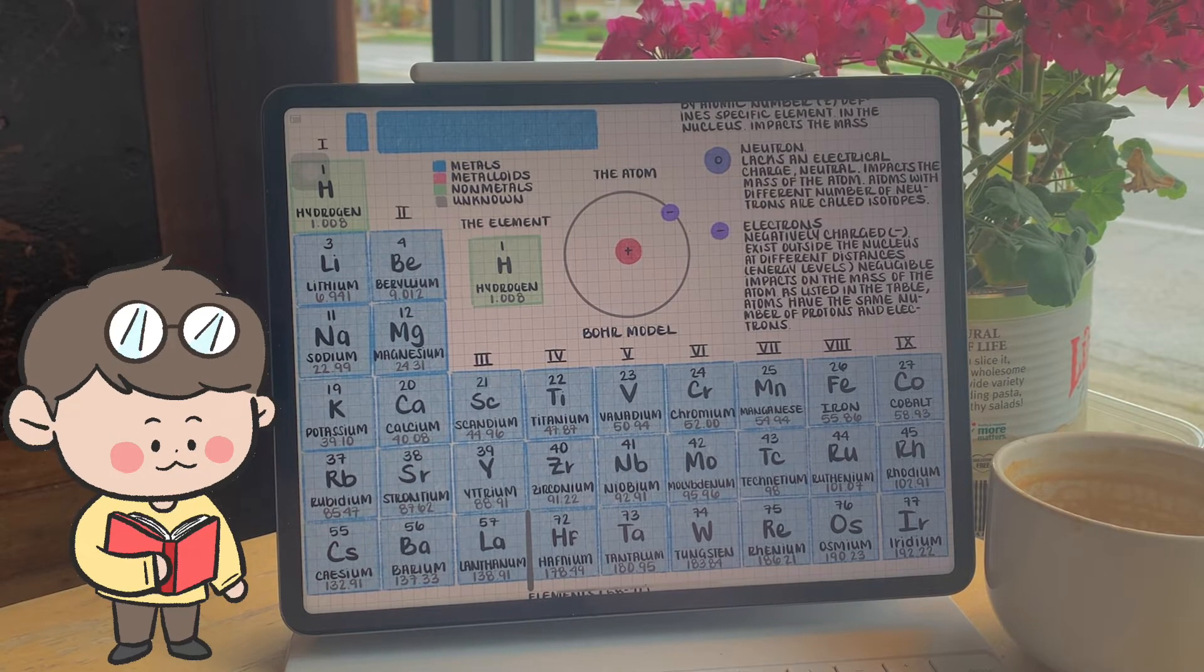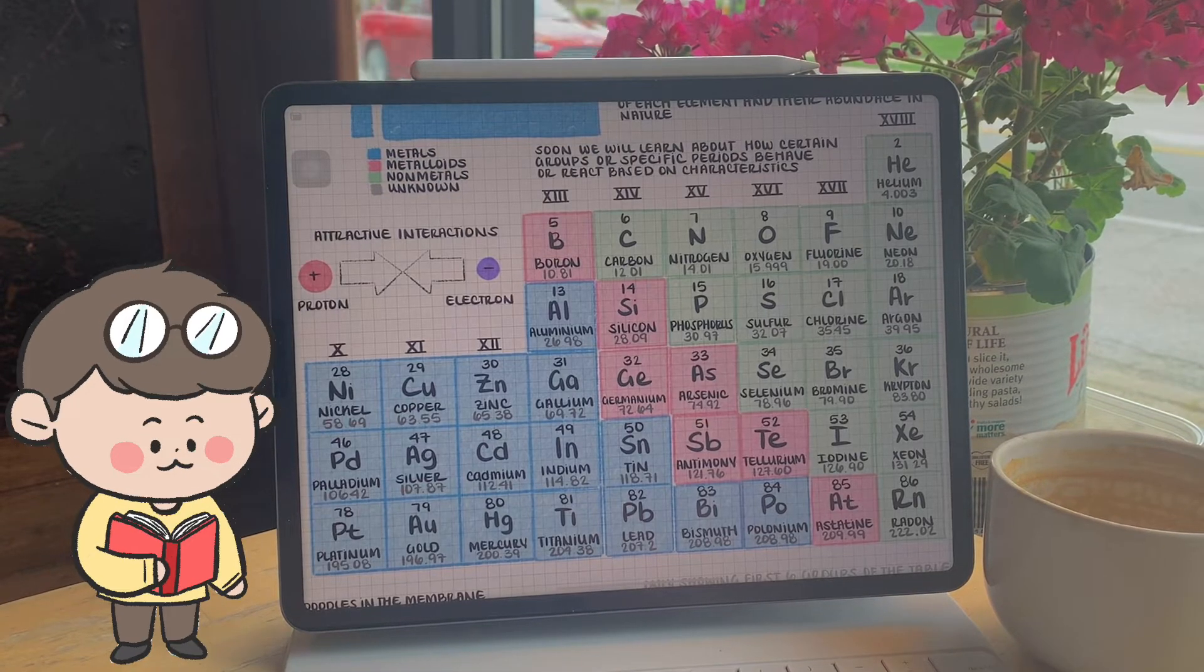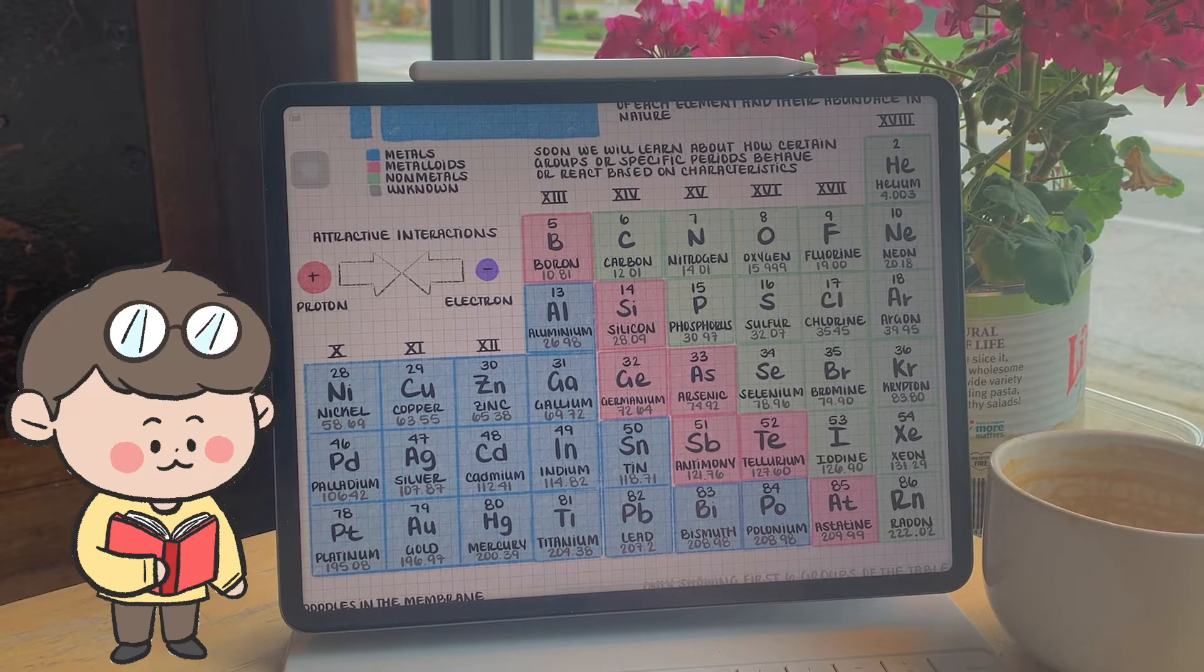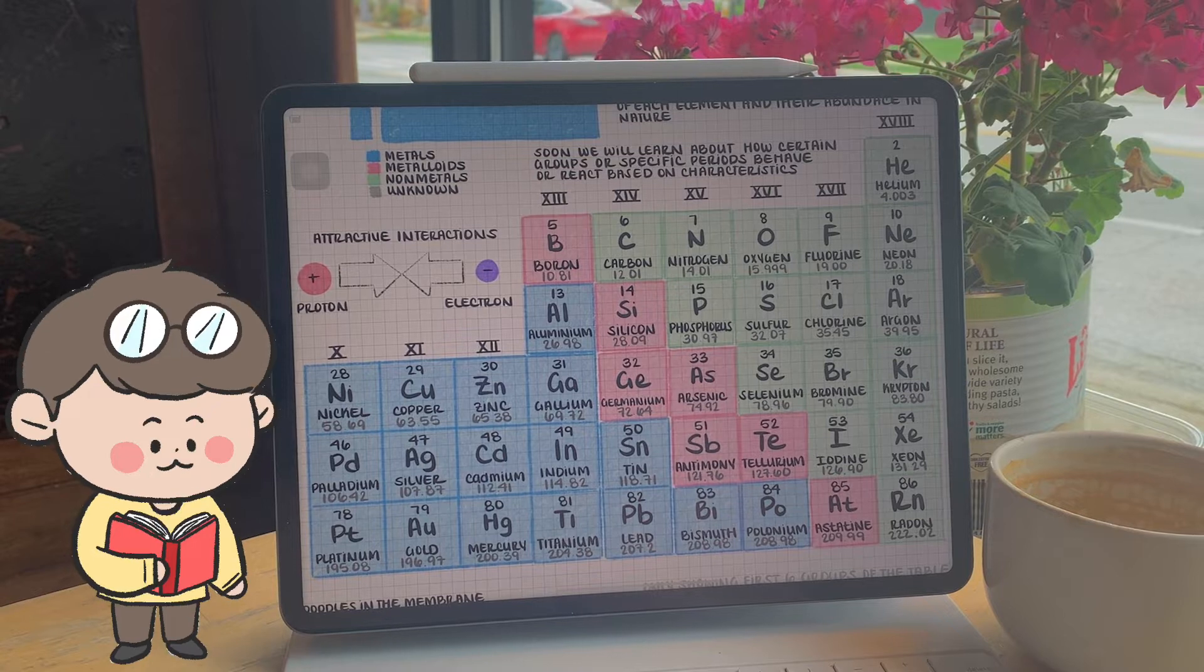Each element listing will also represent the element's symbol, a two-letter sequence that helps represent a specific element, and the atomic mass unit. The atomic mass unit represents the mass of a specific element's atom.